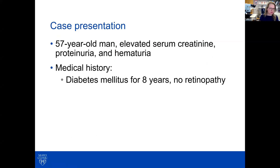So first, I'll start with a case. This is a 57-year-old man who had elevated serum creatinine, proteinuria, and hematuria. The medical history was significant for diabetes for eight years, but he had no retinopathy, and he also had hematuria, so they decided to do a kidney biopsy.